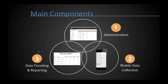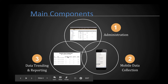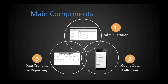Number three is data trending and reporting, done back in the desktop web application. This is where you view historical data collected by mobile devices, run reports, trend and analyze data. Data collection can also take place in the desktop web browser in certain situations where it is more convenient. The only restriction is that equipment configured to mandate barcode scanning cannot have data collected via the desktop, as barcode scanning can only be done from a mobile device.